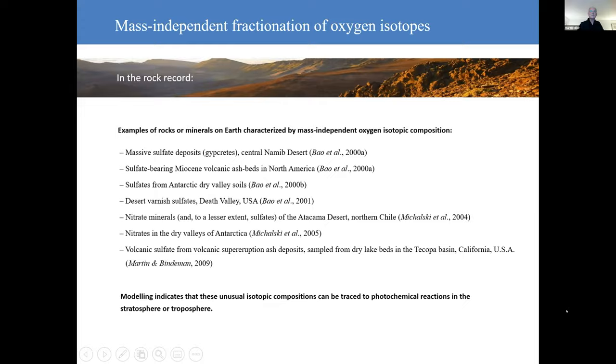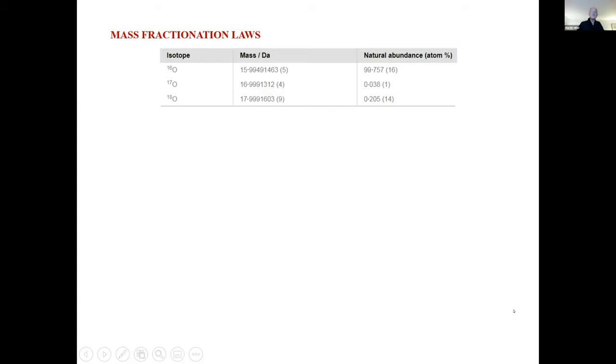Let's look at the mass fractionation laws in a bit more detail. So here we have the natural abundance of the three isotopes. Oxygen 17, of course, is the least abundant, but it's a factor of about 5.3 less abundant than oxygen 18.